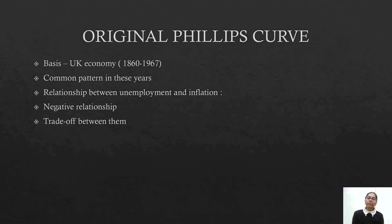If demand will increase, producers will also have to increase their production to match the level of demand. Producers have to increase their production, which means they will need more labor. So demand for labor will also increase, which means employment will increase, or we can say unemployment will fall. Hame ek aspect mil gaya hamare relationship ka — unemployment which is falling. Agar unemployment fall gayi, which means employment is increasing, labors will have more bargaining power and will demand higher wages.